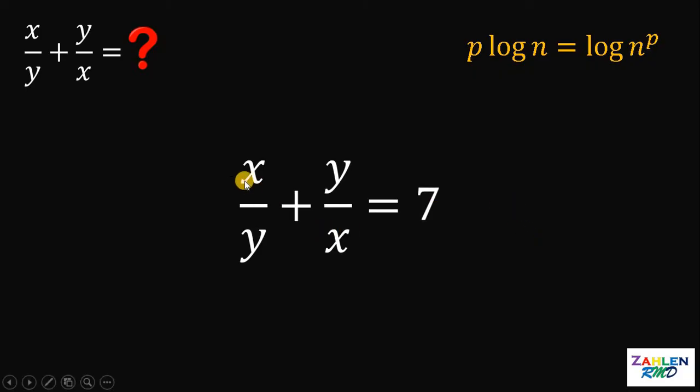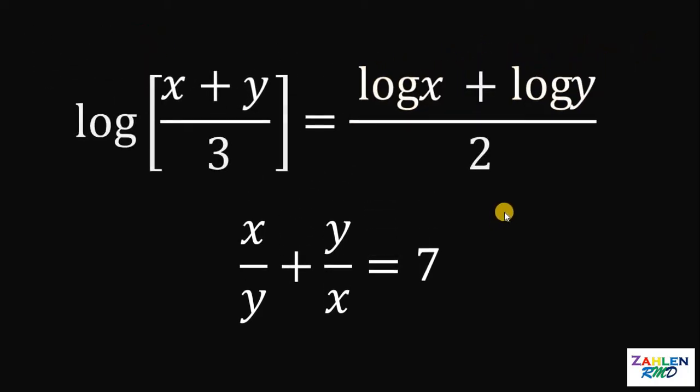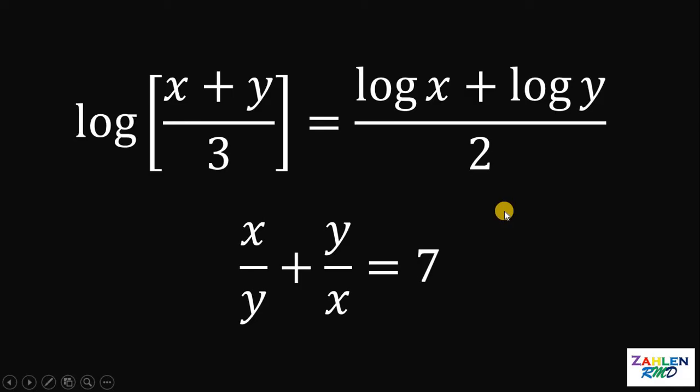Therefore, the value of x over y plus y over x must be equal to 7. And as always, we are done.